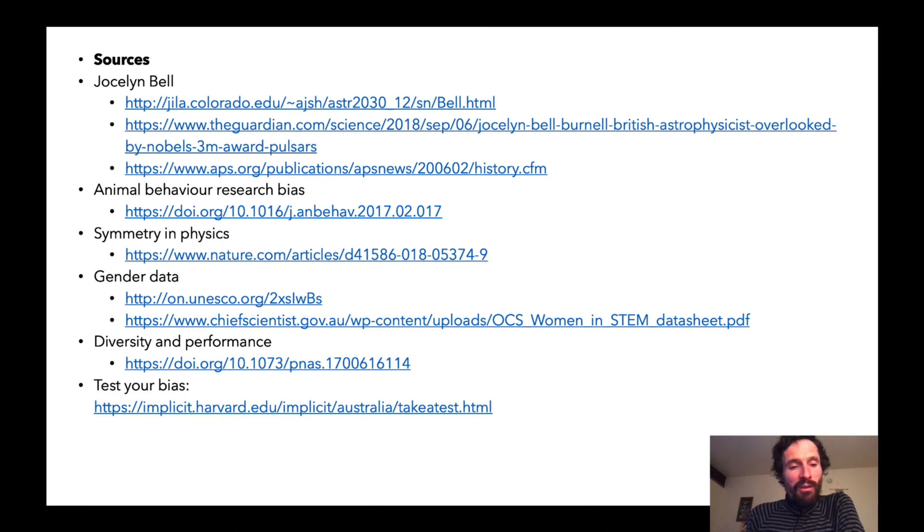Finally, this is a list of sources for what I've been talking about in this little slideshow. Some things about animal behaviour research bias, symmetry in physics, some gender data and also an implicit bias test where you can test your own implicit biases. So, with that I say enjoy your course and I'll see you later.